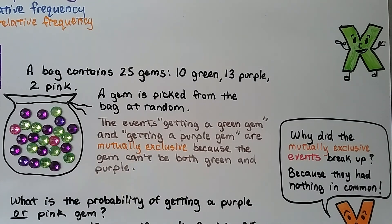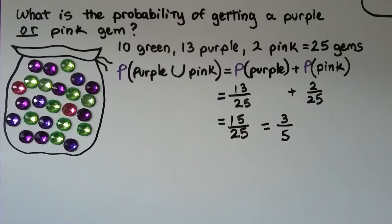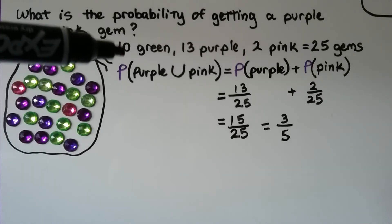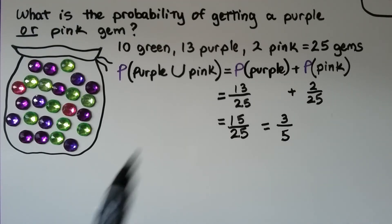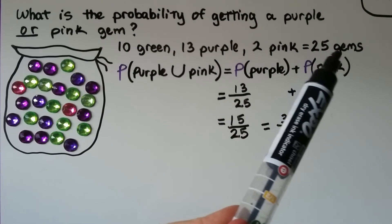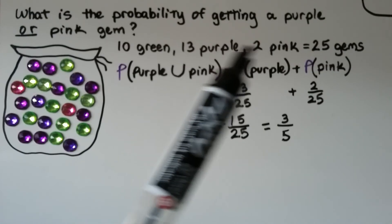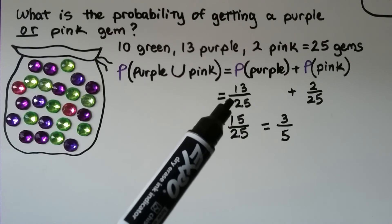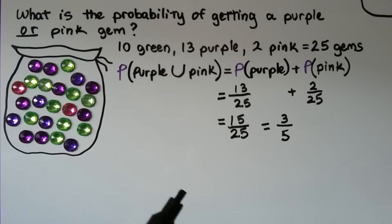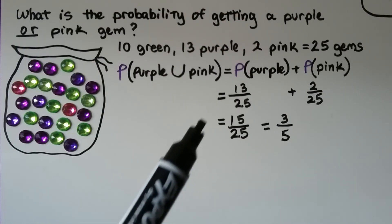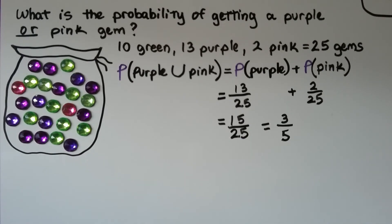What's the probability of getting a purple or pink gem? There are twenty-five gems total: ten green, thirteen purple, and two pink. The probability of getting a purple one — there are thirteen of them — is thirteen out of twenty-five, that's thirteen twenty-fifths. A pink gem — there are two of them — is two twenty-fifths. We add thirteen twenty-fifths plus two twenty-fifths and get fifteen twenty-fifths, which simplifies to three-fifths. That's the probability of getting a purple or pink gem.